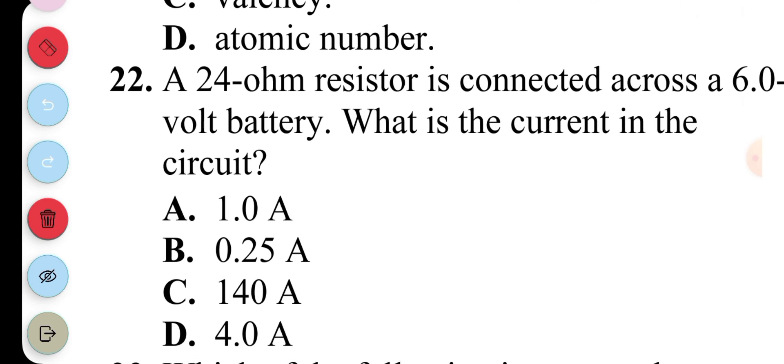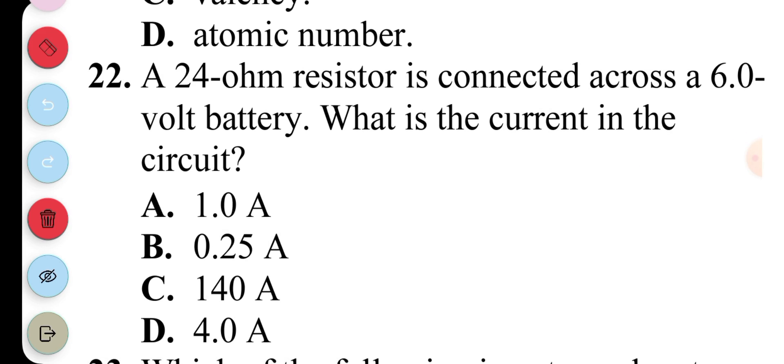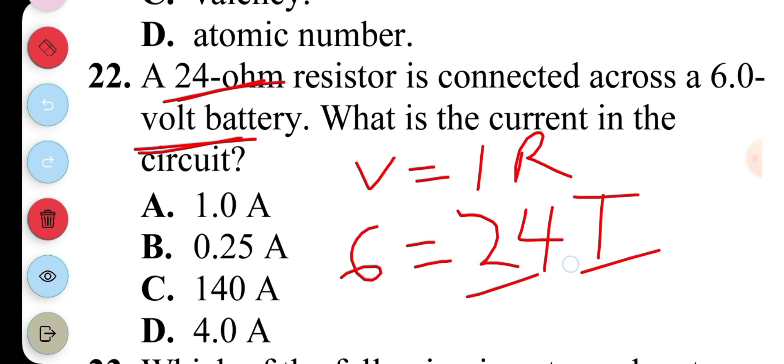Question 22: A 24 ohm resistor is connected across a 6 volt battery. What is the current? Now this is the formula V equals IR. This is the potential difference and then this is the resistance. So when we do our substitution, 6 equals 24I. I equals 6 divided by 24, which gives us 0.25 Ampere. So question 22, my answer is B.